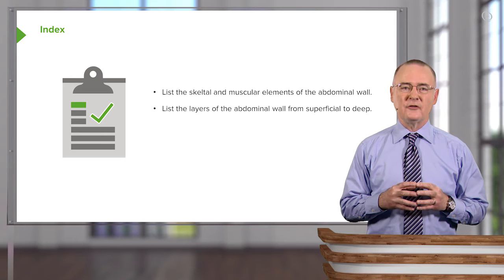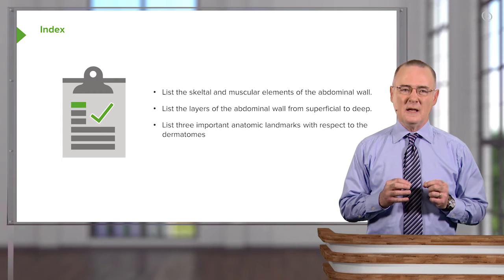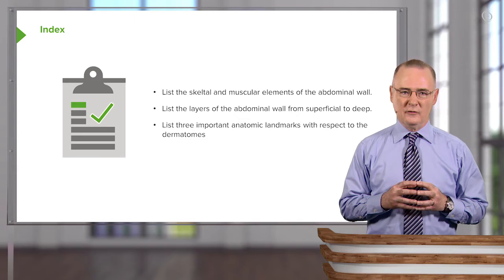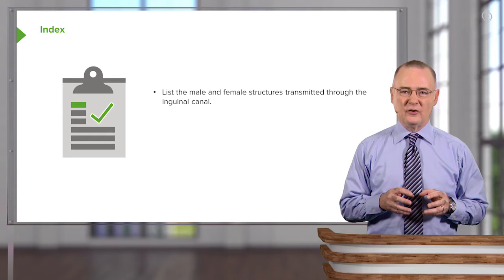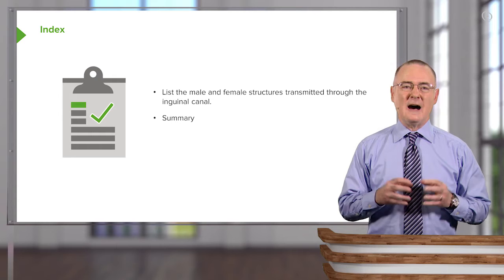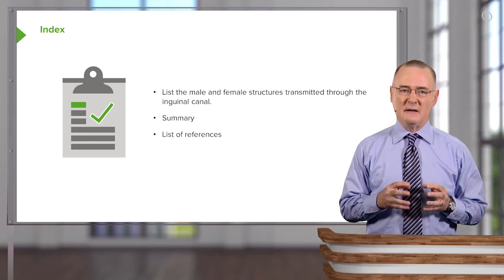List the layers of the abdominal wall from superficial to deep. List three important anatomic landmarks with respect to the dermatomes. And lastly, list the male and female major structures transmitted through the inguinal canal. We will then highlight the key messages from this presentation in the summary and then provide attribution of the images used throughout this presentation.